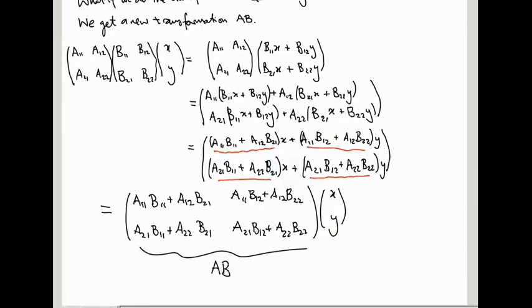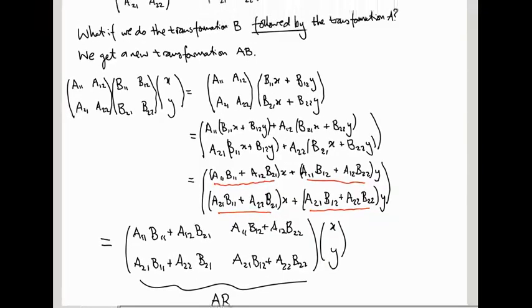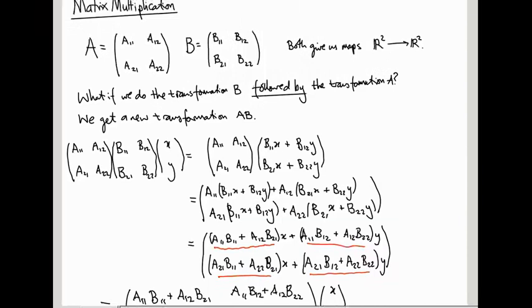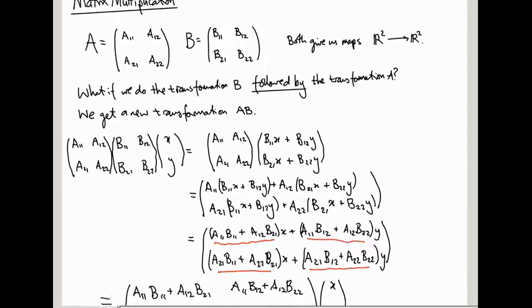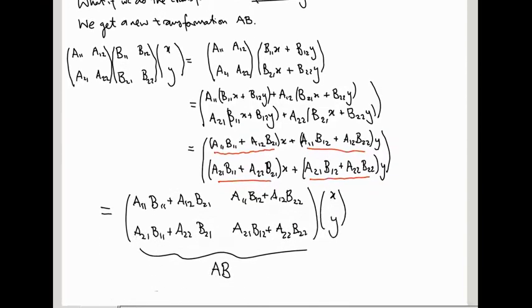So given a matrix A and a matrix B, whose entries are these A₁₁s, etc., and B₁₁s, we end up with a matrix AB, whose entries are this mess here. So we adopt this as our definition of matrix multiplication. This is what it means to multiply A and B. It means you get a new matrix, which is this.